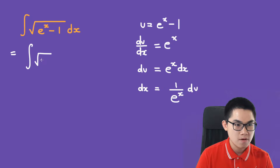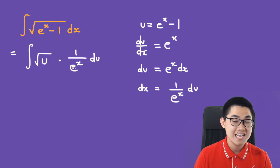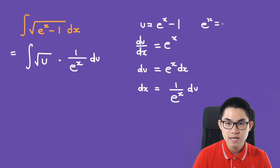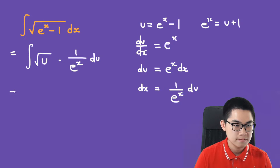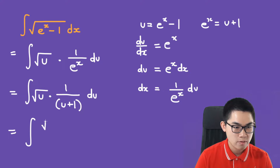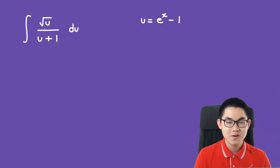Substituting in, we have the integral of the square root of u, and dx is 1 over e to the power of x du. To express e to the power of x in terms of u, we consider the substitution equation: e to the power of x is u plus 1. So we have the square root of u times 1 over u plus 1 du, giving us the square root of u over u plus 1 du.